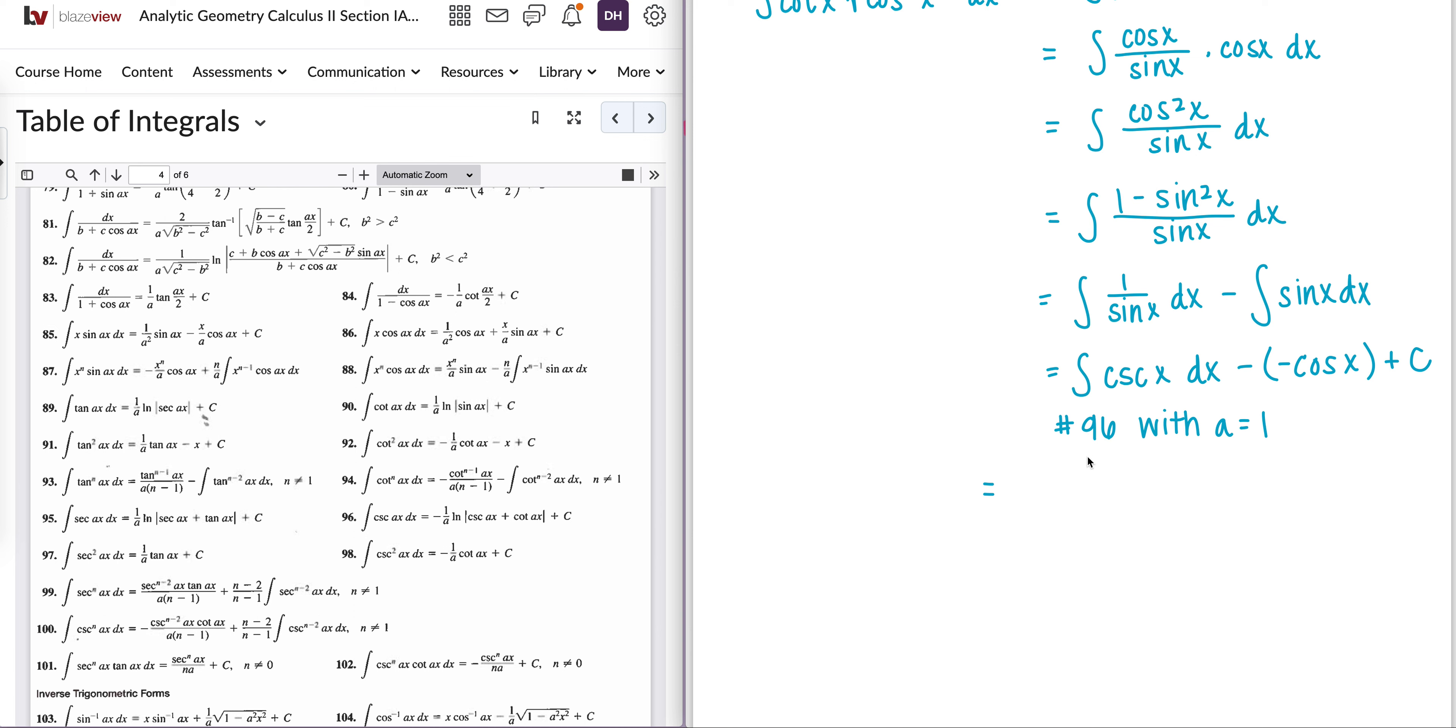So using that formula, we get negative 1 over a. So negative 1 over 1 is just negative 1. So we get negative, then the natural log of cosecant ax, cosecant 1x. So that's just cosecant x plus cotangent ax. Again, just cotangent x. The double negatives here make a plus cosine x.